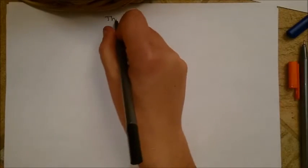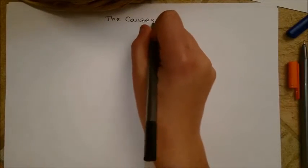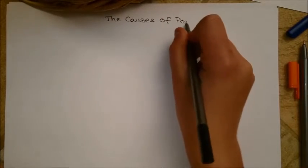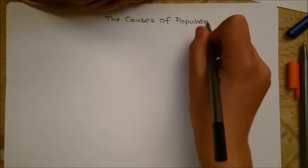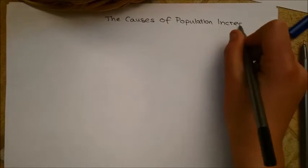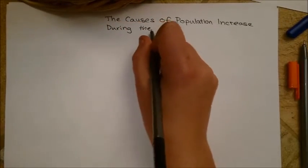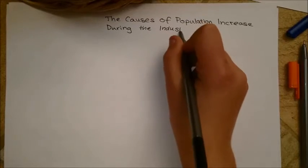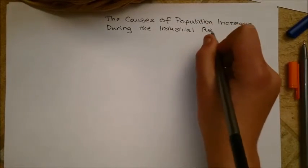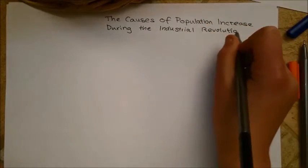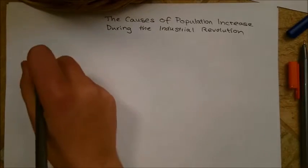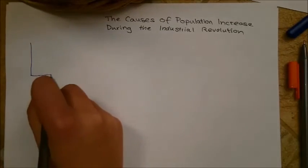This video is on the causes of population increase during the industrial revolution. First up we'll take a look at how population has grown and changed over time. And second of all in this video we'll look at the causes of these population trends, the two most notable of which are a decline in mortality rates and the unchanged birth rates.